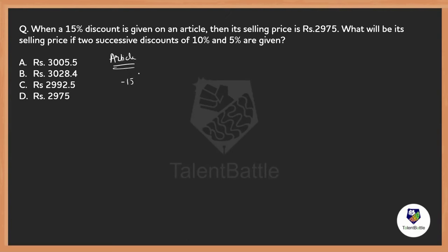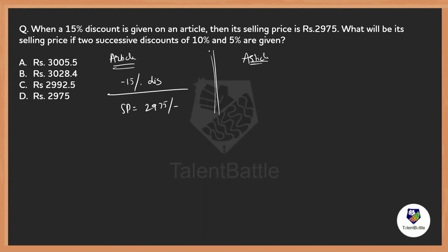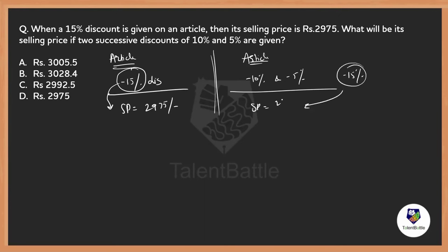So on this article, if 15% discount is given, the selling price is 2975 rupees. Now the question is: on the same article, if successive discounts of 10% and 5% are given, what will be its selling price? Most people will think: 15% discount gave 2975, and minus 10 plus minus 5 also gives minus 15%, so the answer should still be 2975.